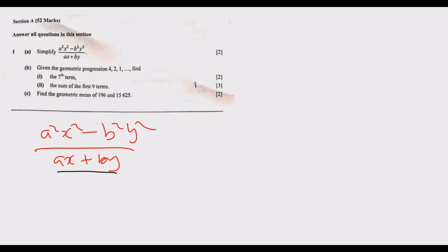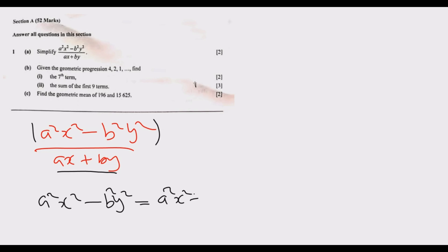The numerator a squared x squared minus b squared y squared can also be written as a squared x squared plus 0x minus b squared y squared. If you look at this, you notice we have a general quadratic equation of the form ax squared plus bx plus c.